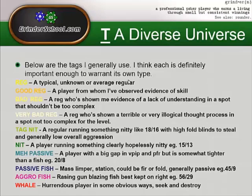The Passive Fish is a very common type of player — mass limper, station, could be fit-or-fold. Something like 45/9 is a standard example. A Passive Fish is someone who's going to be limp-calling a lot, probably folding to c-bets when they don't have anything, but calling down relentlessly with gutshots. You get different kinds of Passive Fish — I might even consider branching this into two categories: one who's very stationy and never folds, and one who's extremely fit-or-fold but wants to see lots of flops.